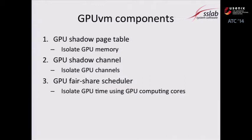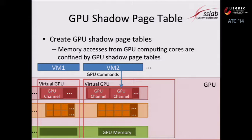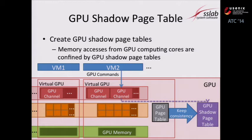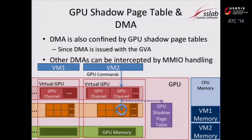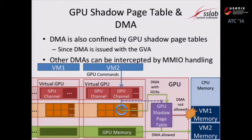GPU VM logically partitions GPU memory and isolates it between VMs by creating GPU shadow page tables. GPU VM keeps track of modifications to the guest GPU page table and updates the shadow page table. The GPU shadow page table guarantees that commands submitted from one VM cannot access the memory region assigned to other VMs. It also guarantees the safety of DMAs: since DMA uses GPU virtual addresses, DMA from one VM cannot access CPU memory assigned to other VMs.